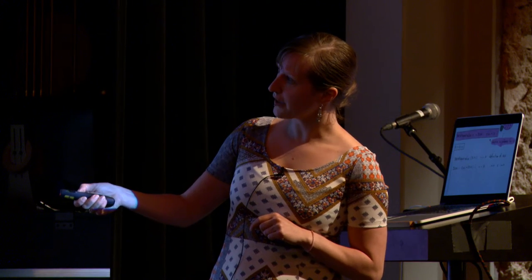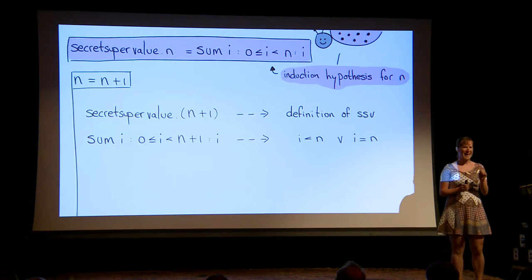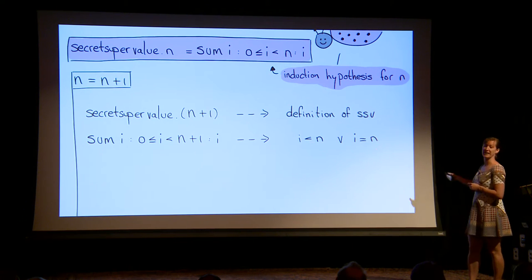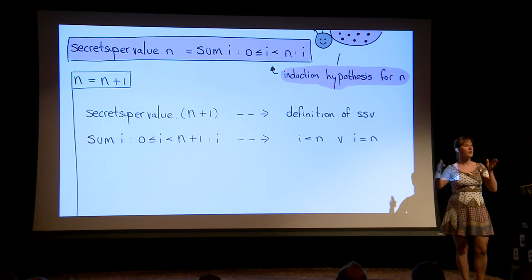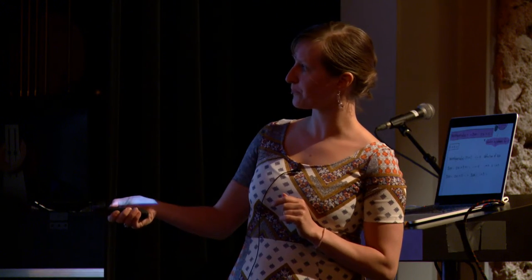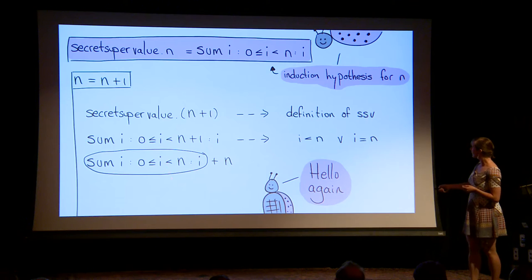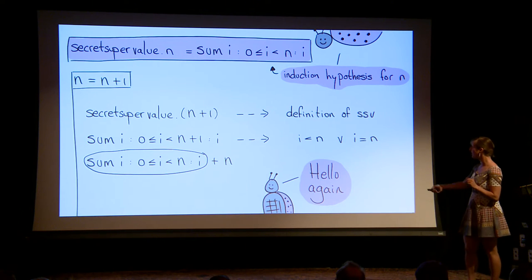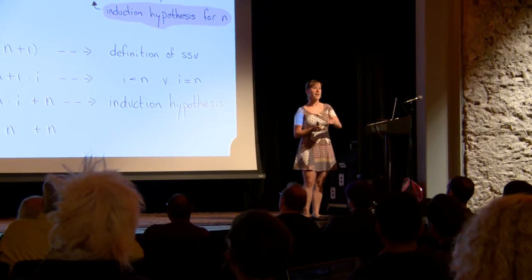So observe: i is smaller than n plus 1, which means i can be at most n. So either it's smaller than n or it equals n — those are the two options. This is one of those tricks you have to know: if you see a range, you can split it. Here we have a summation over one value, which is easy to see equals that exact value. And then what do we see? We know that guy — that is the induction hypothesis! Because we're in a situation where we have n, which is smaller than n plus 1. We may assume that's already taken care of. So that, with the induction hypothesis, is the secret super value of n, plus n.